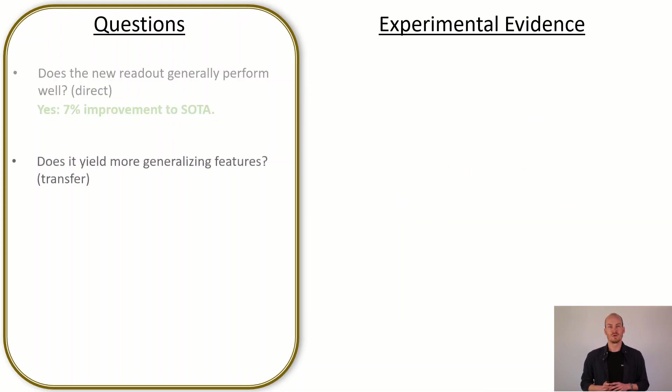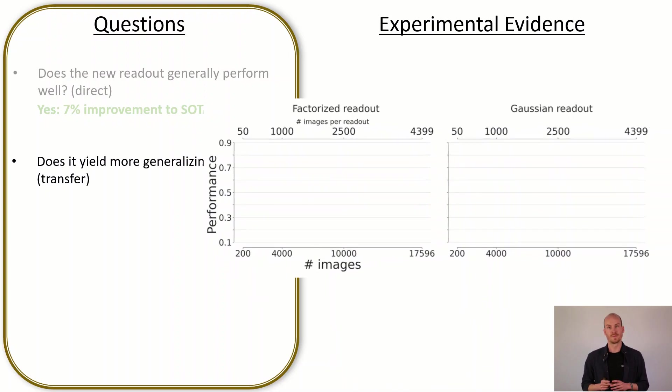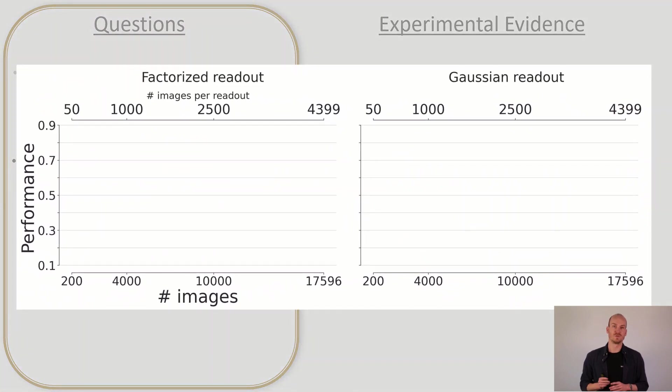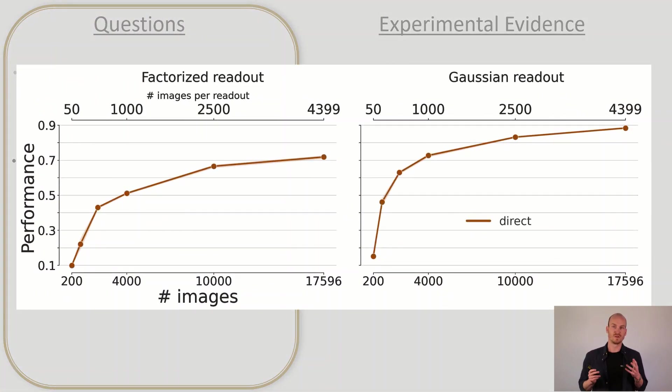Now we want to know if our readout actually does its job that we designed it for, namely if it gets generalizing features out of the core. Let's have a comparison again between the old and the new readout. If we look at the direct training we see that the Gaussian readout is better. We already know that from the previous plot. Now if we look at a training at an experimental setup where we always have the full data for the readout but the core is trained on different amounts of data we can see the following curve.